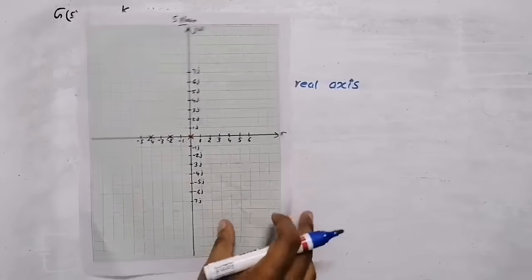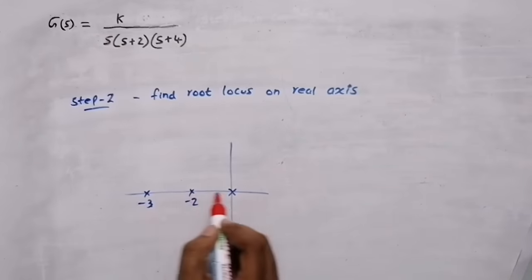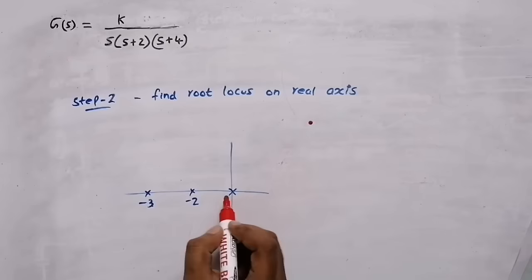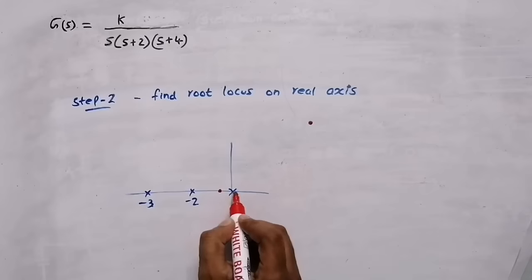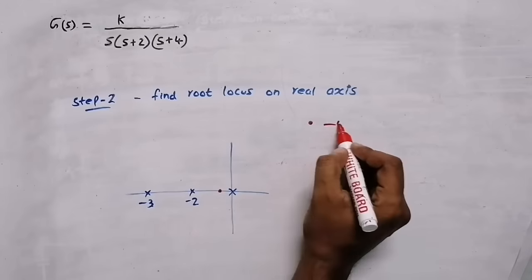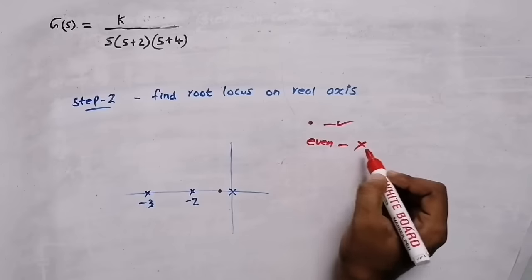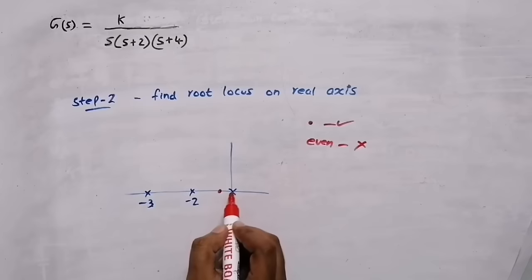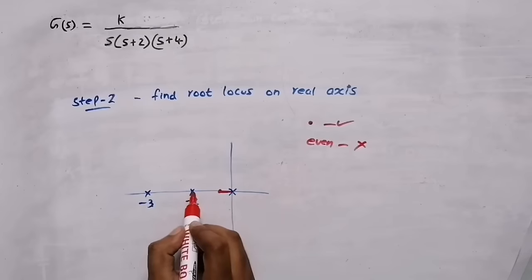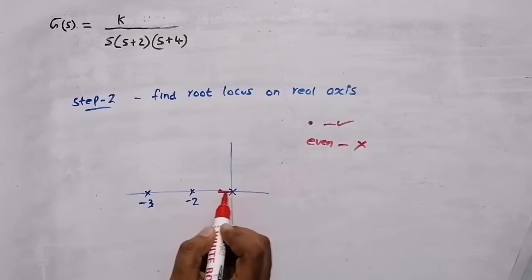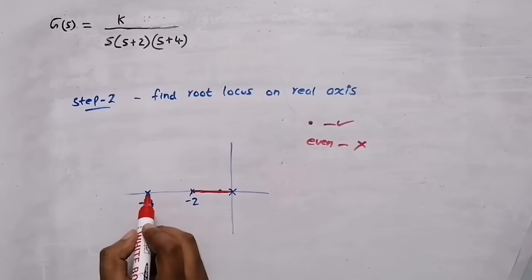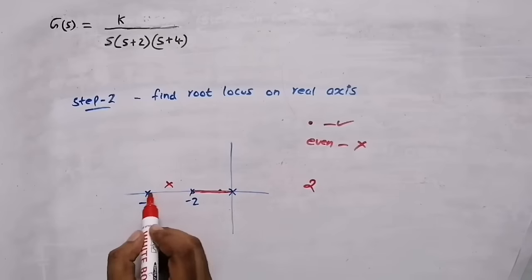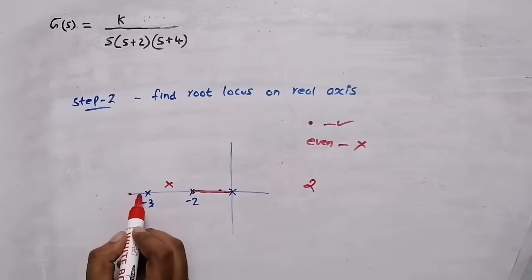Step two is to find the root locus on the real axis. I need to use a test point on the real axis. When the test point has an odd number of poles and zeros to its right, the root locus exists there; if even, the root locus does not exist. Testing between 0 and -2: there is one pole to the right — odd — so root locus exists. Testing between -2 and -4: there is one pole to the right — odd — so root locus exists. Testing to the left of -4: there are two poles to the right — even — so root locus does not exist there.